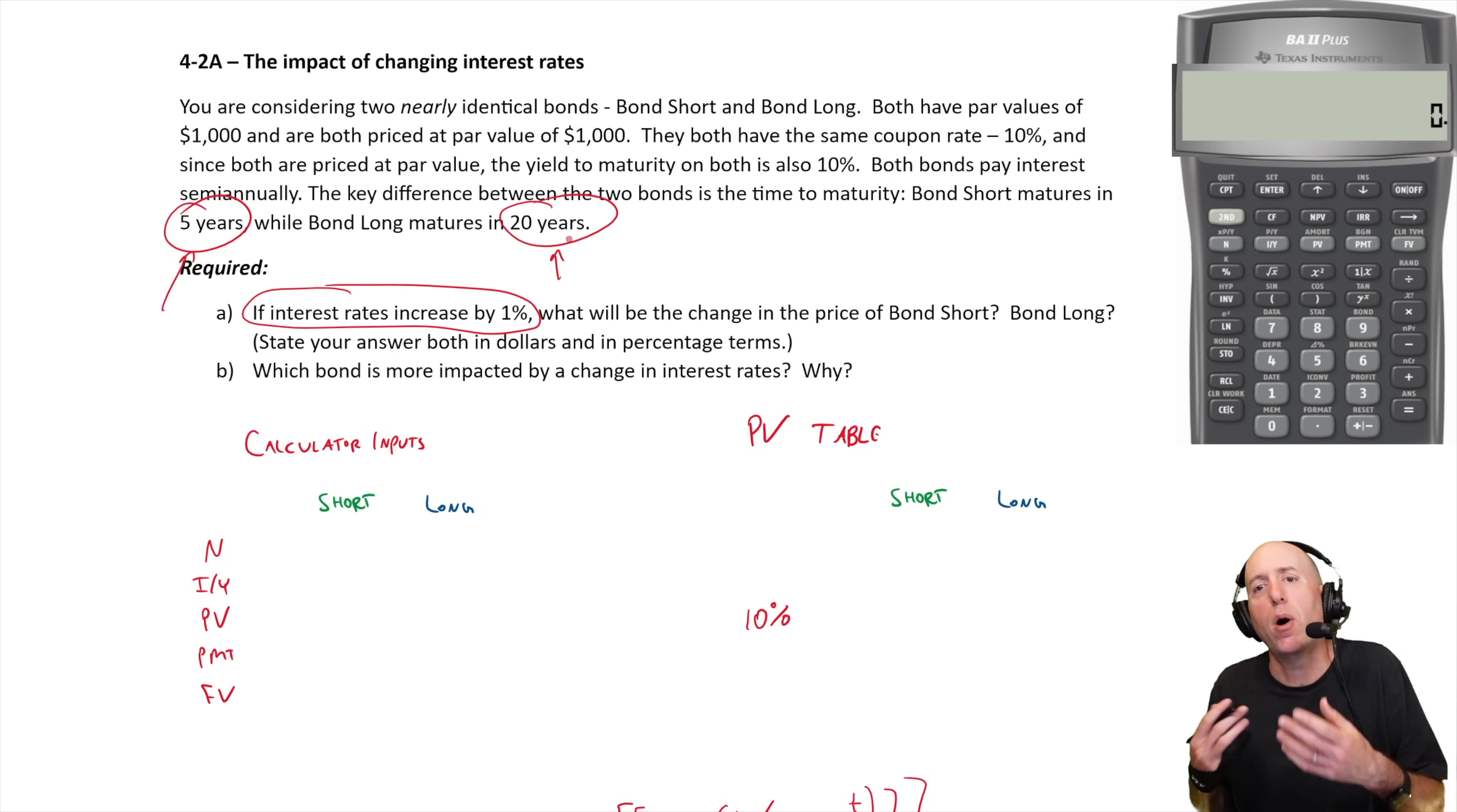But the question is, will it affect the five-year bond or the 20-year bond more? Which bond has higher interest rate risk? I'm going to answer that question for you right now. If you have a short bond, which is five years, which is 10 payments, compared to a long one which has 40 interest payments.